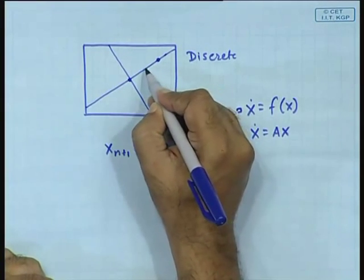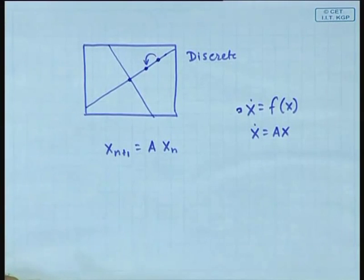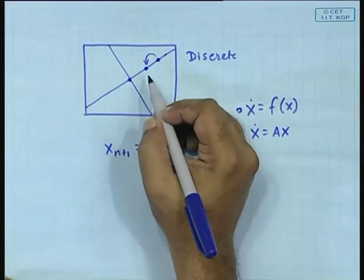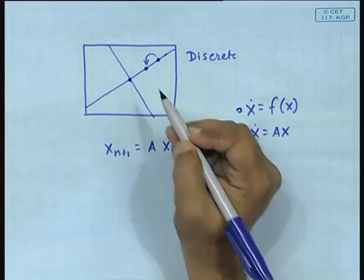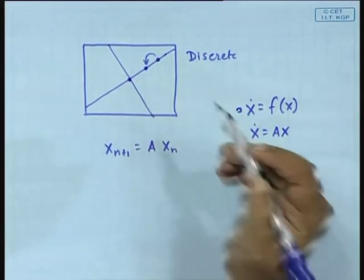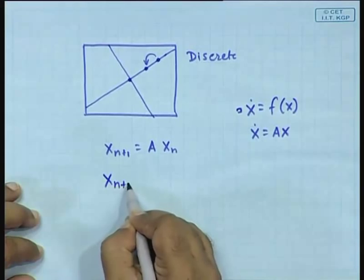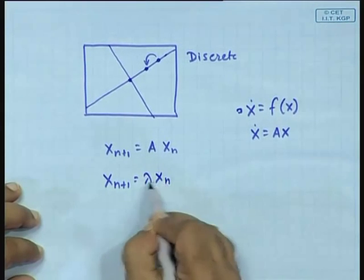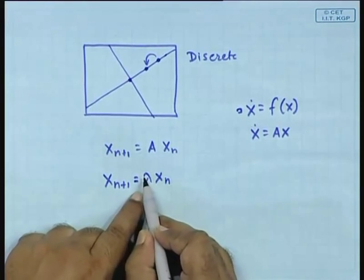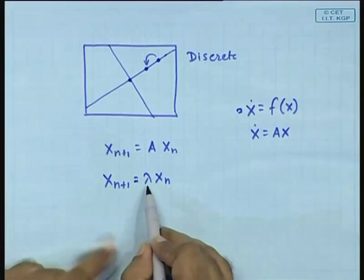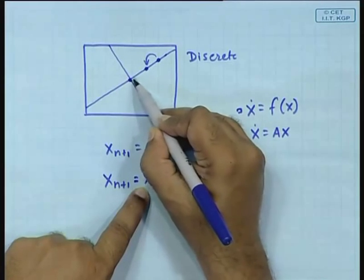So if the initial condition is at some point, in the next iterate it jumps. This distance divided by that distance will be the eigenvalue. In the eigendirection, x_{n+1} = λ·x_n, where λ is a scalar. If λ = 0.6, then x_{n+1} is 0.6 times x_n, so it lands closer to the fixed point.